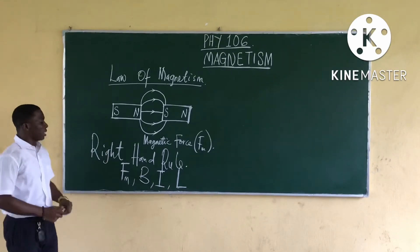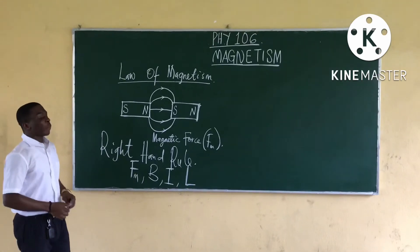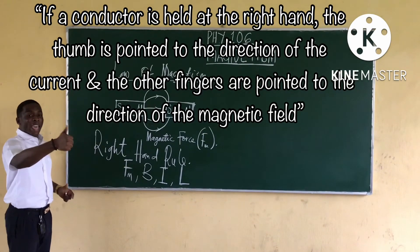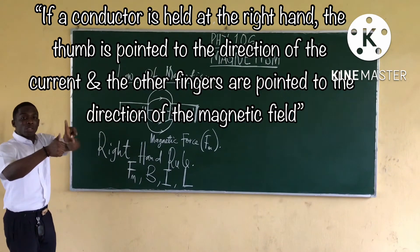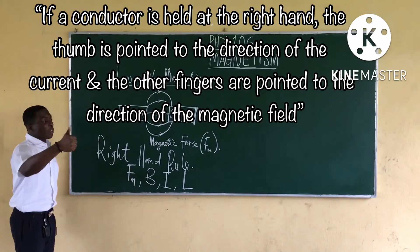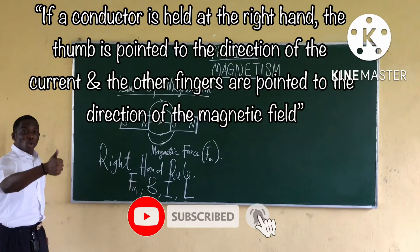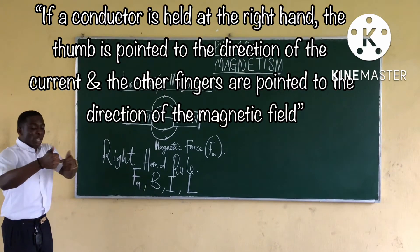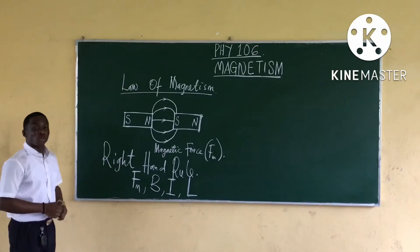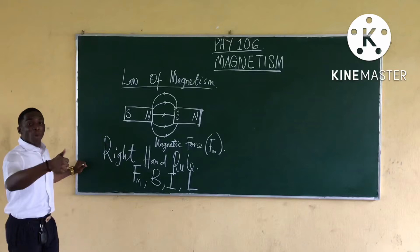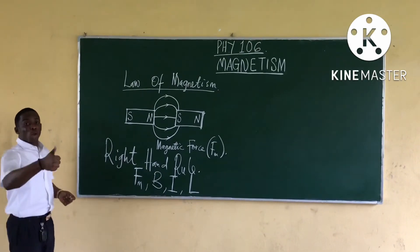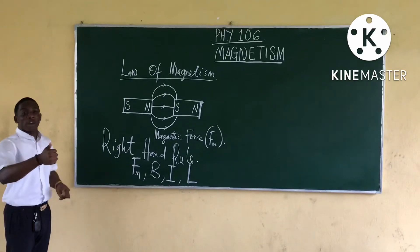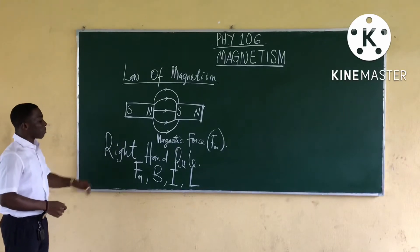The Right-Hand Rule states that if a conductor is held in the right hand, the thumb is pointing towards the direction of the current, and the other fingers are pointing towards the direction of the magnetic field. That is the statement of the Right-Hand Rule.